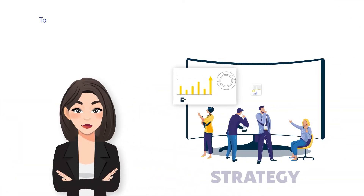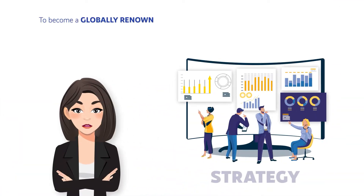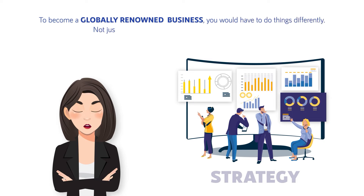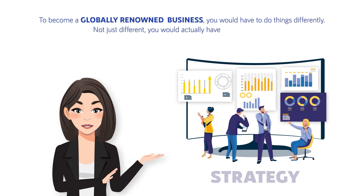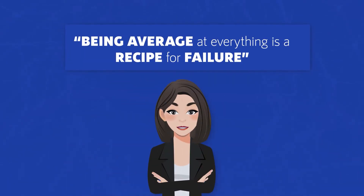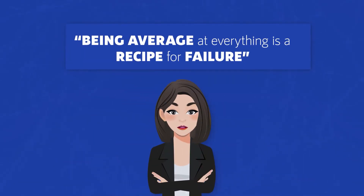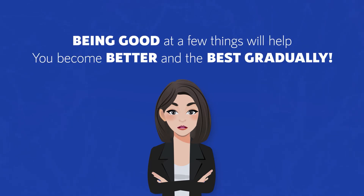It's easy. To become a globally renowned business, you would have to do things differently — not just different, you would actually have to be better. Being average at everything is a recipe for failure, while being good at a few things will help you become better and the best gradually.